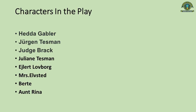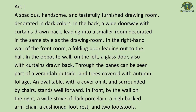There is also Mrs. Elvsted, who is helping Lovborg make things happen. She was once a schoolmate of the main character Hedda Gabler and is also a rival as the play begins. Another character is Berta, the housemaid who once served Miss Julian Tessman and is now going to be housemaid for Miss Hedda Gabler. The last character is Aunt Reena, who never appears on stage but is constantly part of the conversation among the characters in the play.